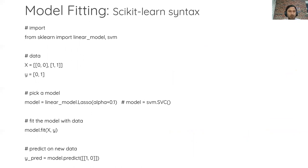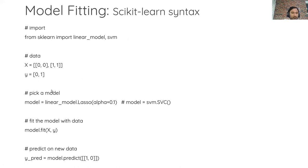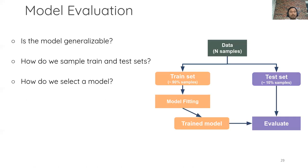Model training is actually the easy part. Here I'm showing a code snippet where you import models from the scikit-learn library in Python, get some data, and pick a model — in this case, a linear model with lasso regularization, or alternatively a support vector machine. You then fit the model to the data by calling the .fit method. Once fitted, if you have new data you can use this fitted model to predict on a new sample. The hard part is knowing how to evaluate the model's performance or how well it will perform on different types of datasets.